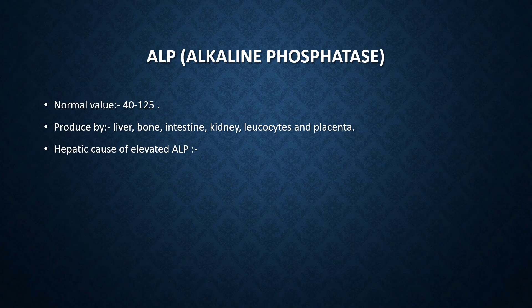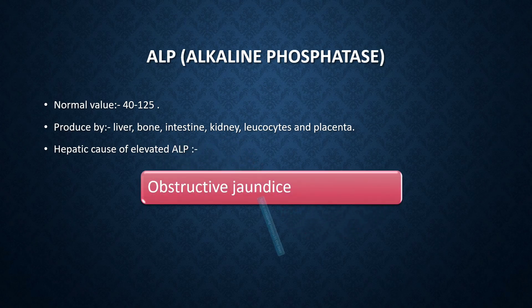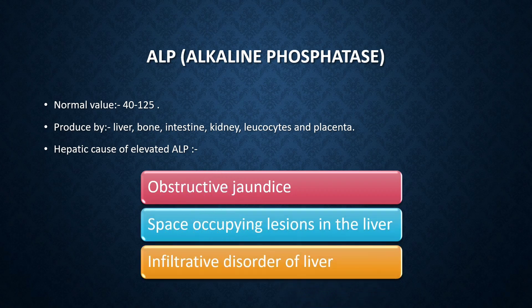The next enzyme is alkaline phosphatase (ALP), with a normal value of 40 to 125. It is produced not only by the liver but also by bone, intestine, kidney, leukocytes, and the placenta. So ALP increases not only in liver disease but also in bone malignancy, intestinal disease, kidney disease, WBC disorders, or pregnancy. The hepatic causes of ALP elevation include obstructive jaundice, space-occupying lesions in the liver, and infiltrative disorders like hemochromatosis, glycogen storage disorder, Gaucher's disease, and amyloidosis. Therefore, ALP is not specific for liver disease and must be interpreted alongside other liver function tests.